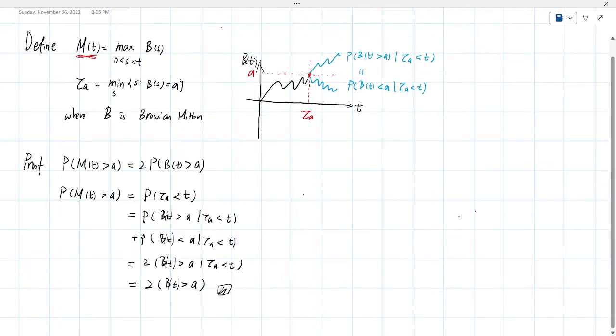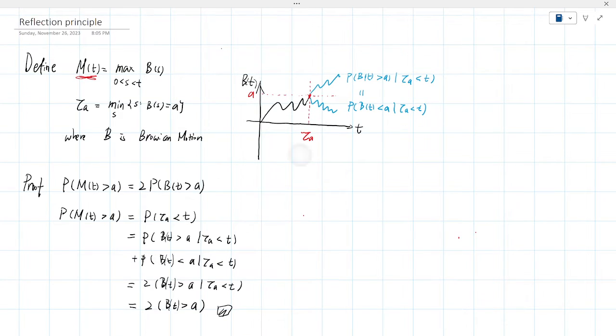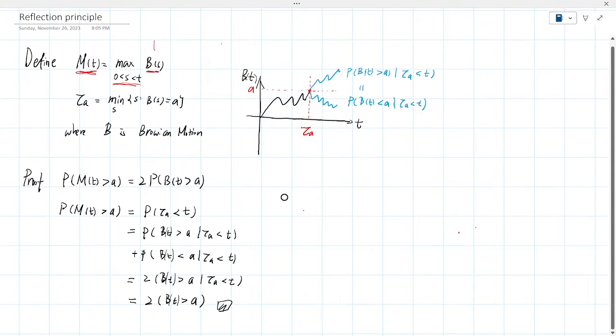Define MT as maximum of BS, the entire process of Brownian motion with the maximum value within that period. And tau is the first time the Brownian motion reached value A.